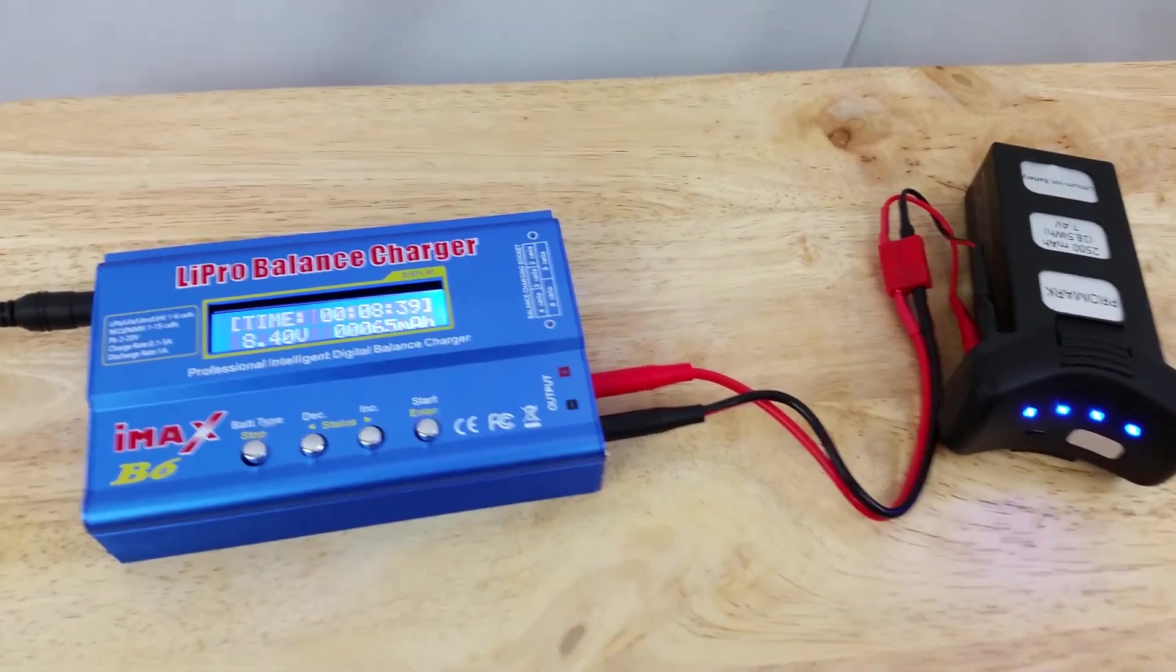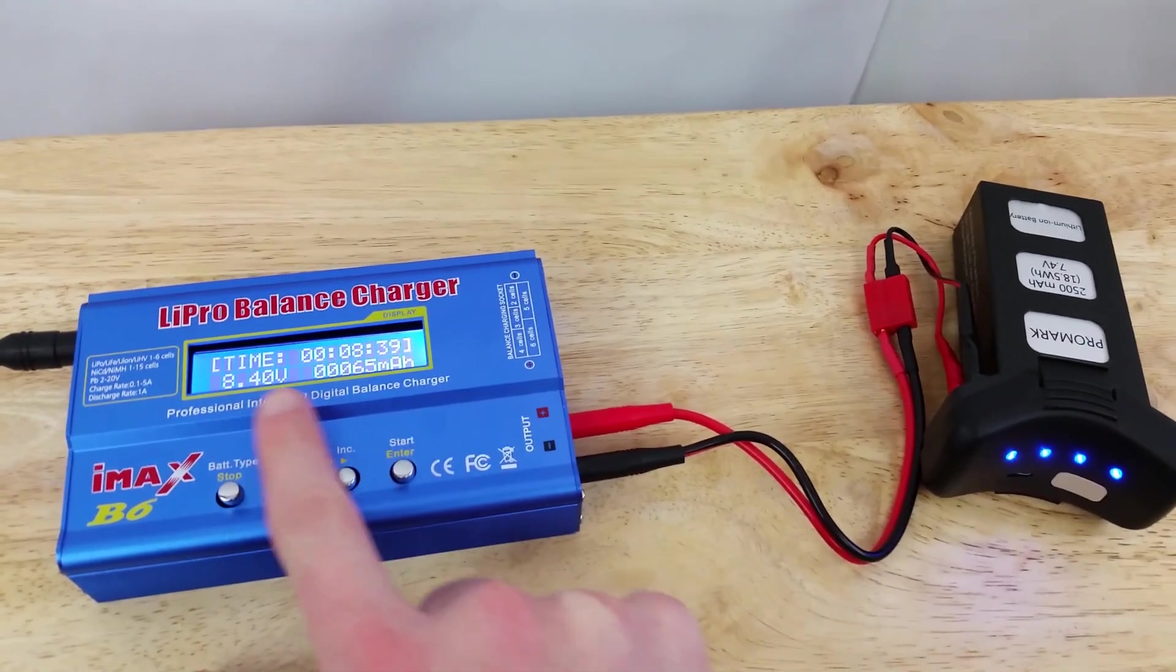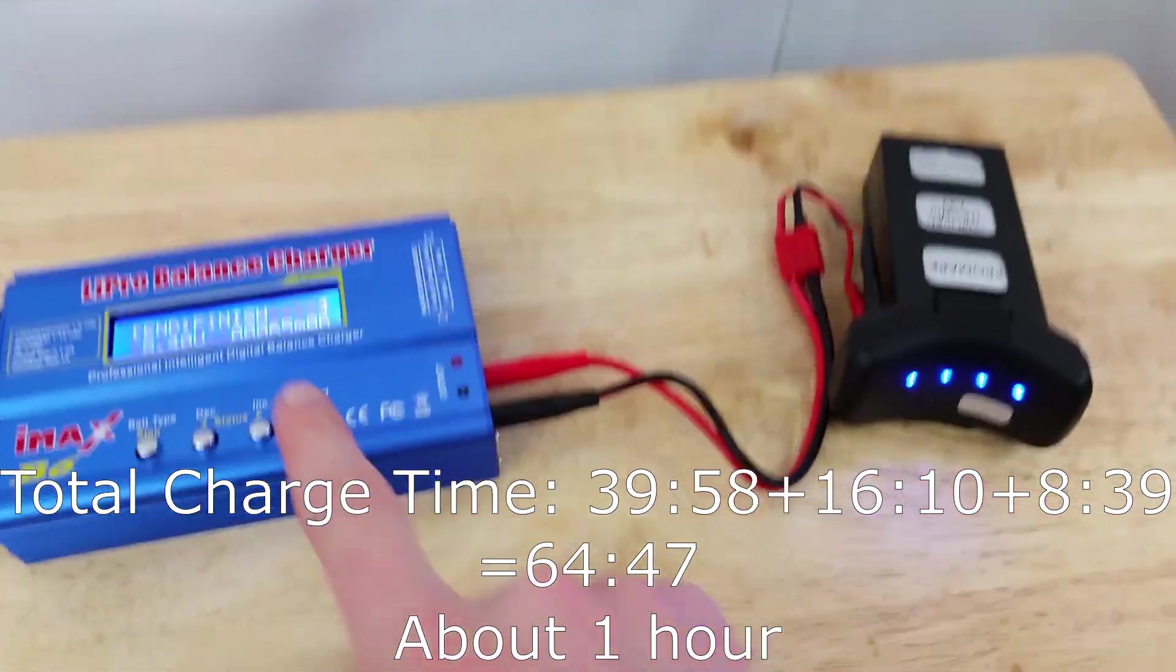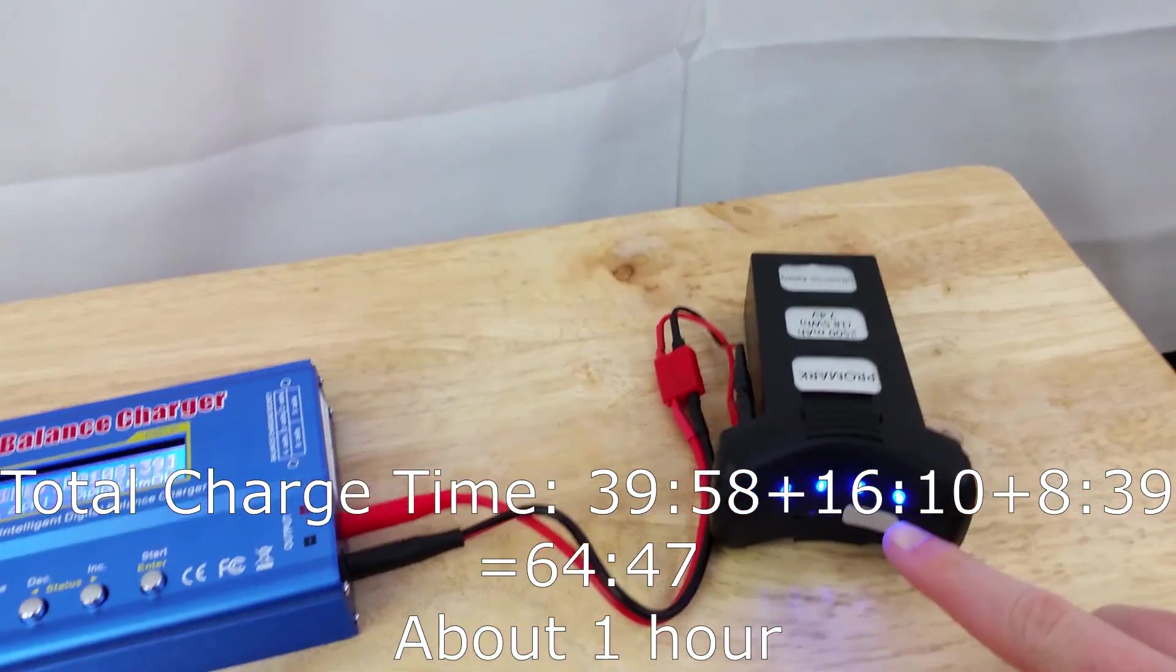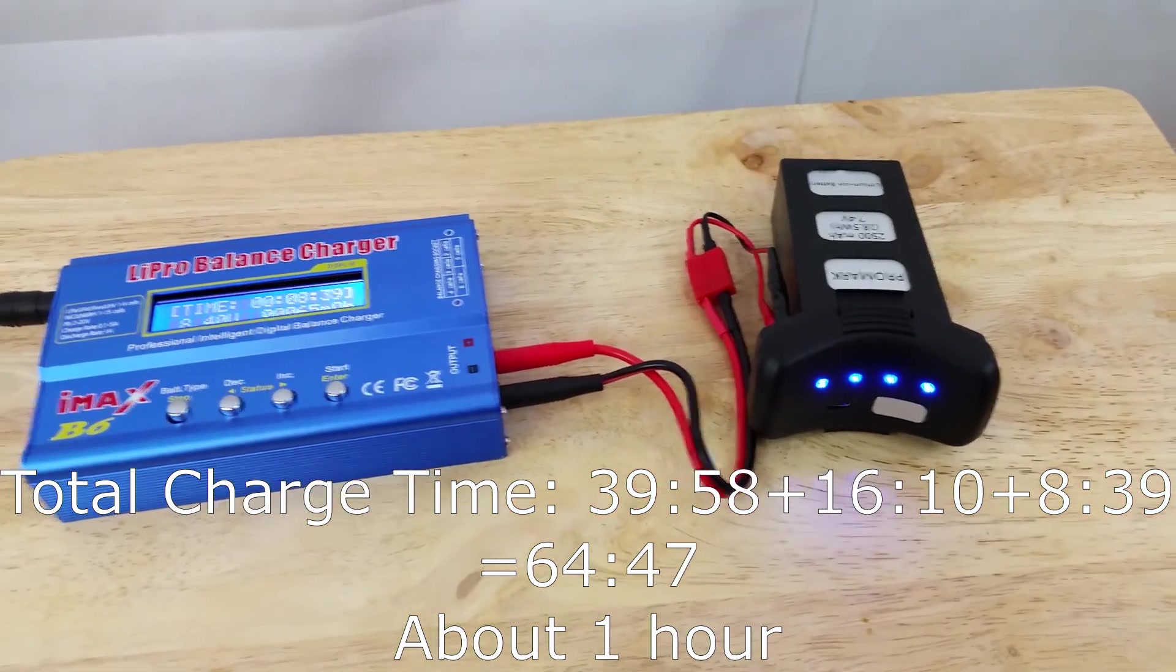We just finished charging and it was an extra 8 minutes and 40 seconds to get it up to 8.4 volts, which was pretty much at anyway, but it did go ahead and top it off some. And you can see we have all four lights here. So now we're fully charged and ready to go again.